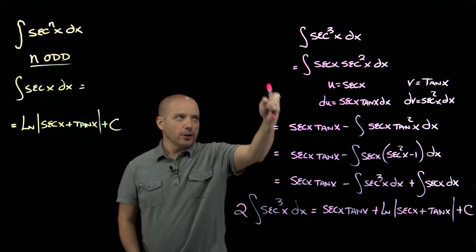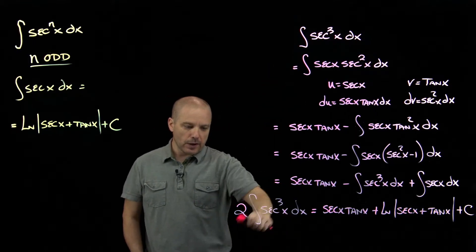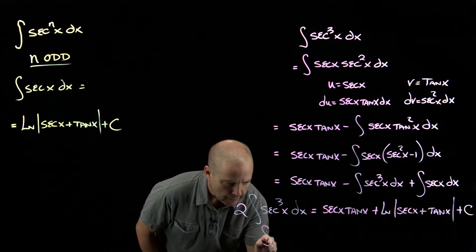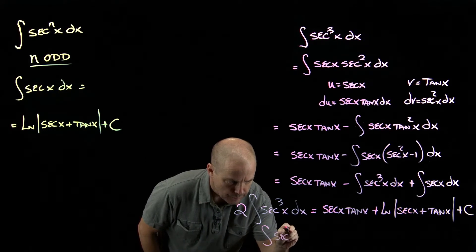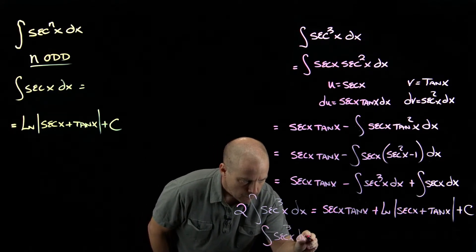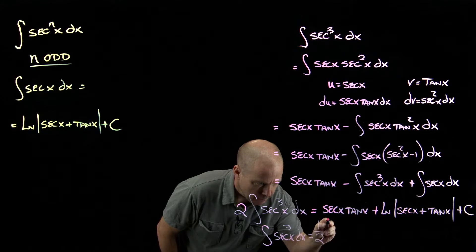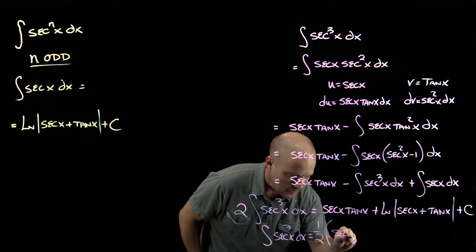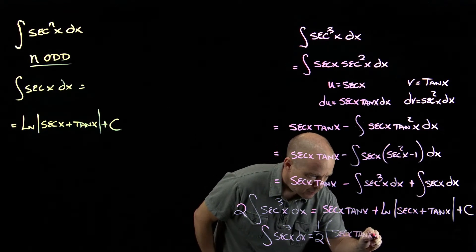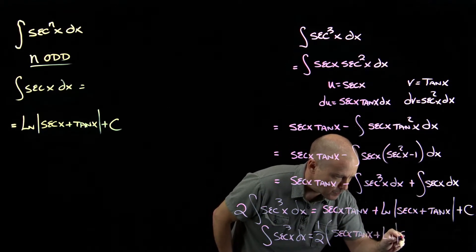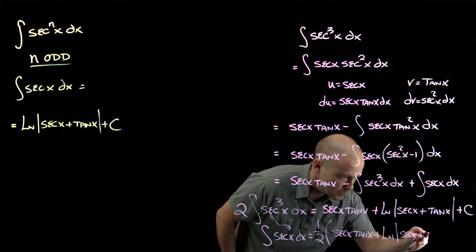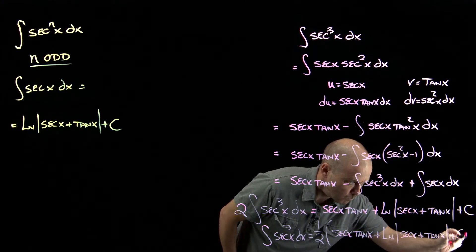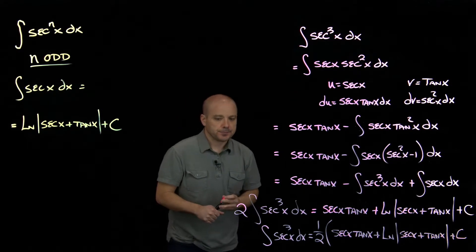Well, we wanted to know what the integral of secant cubed is. Right now we've got twice that, so divide by two on both sides. So that tells us then that the integral of secant cubed is one half this: secant x tangent x plus natural log absolute value of secant plus tangent, plus our constant.